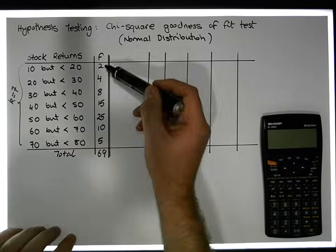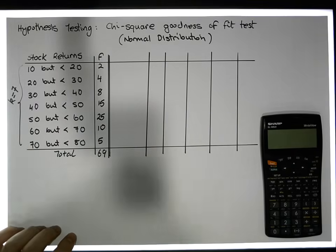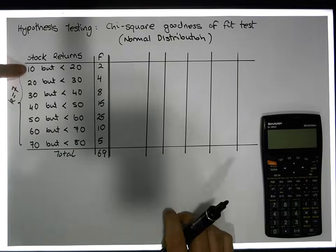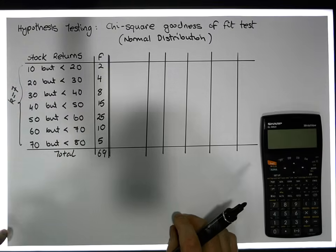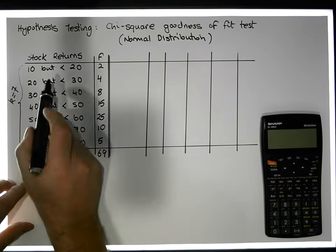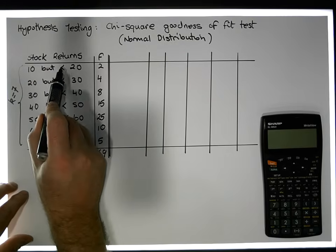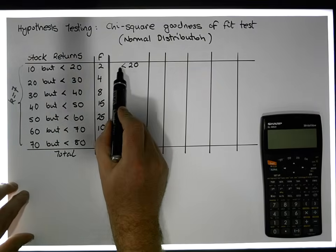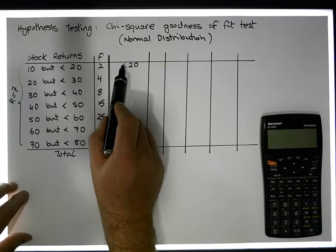The question is: do these observed frequencies follow what we'd expect if there were a normal distribution? To address this, we're going to convert these categories into a continuous variable extending from negative infinity to positive infinity. We'll assume that the first category represents all observations less than 20 — capturing even negative returns.